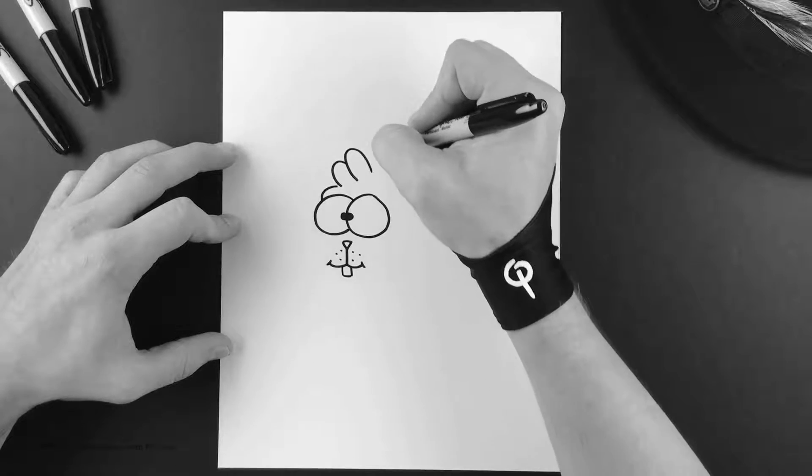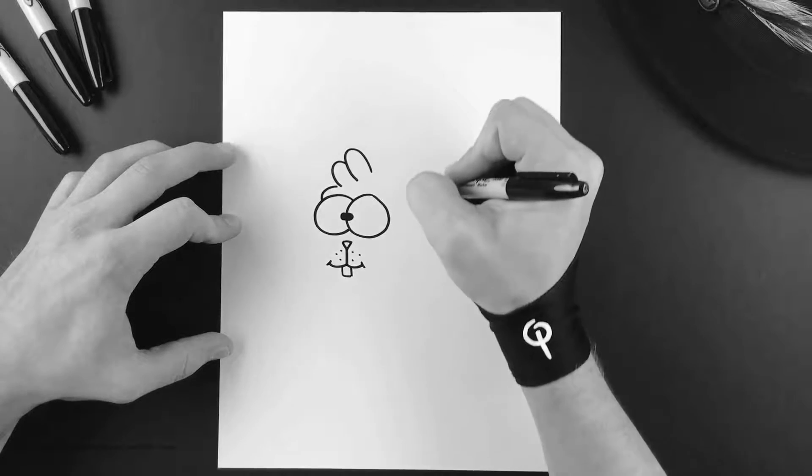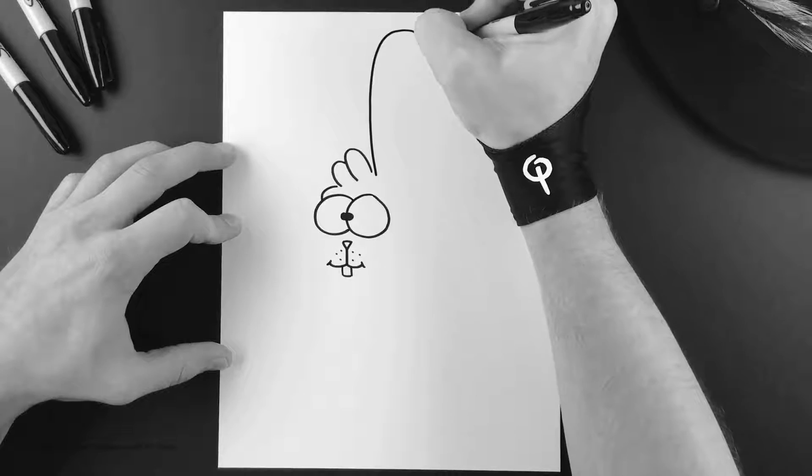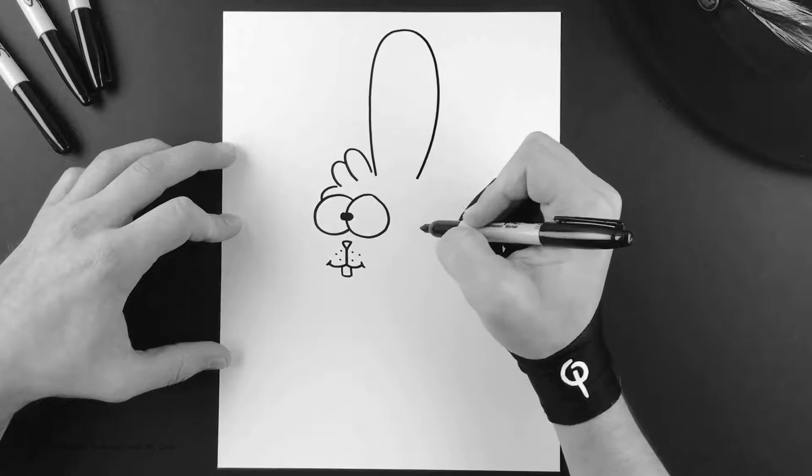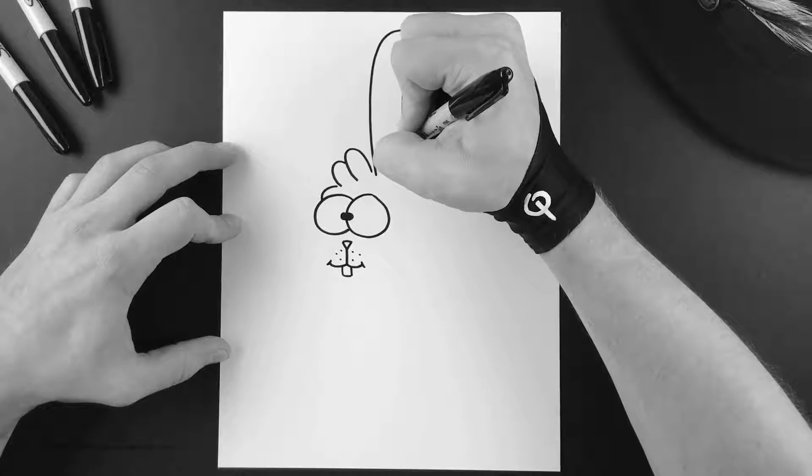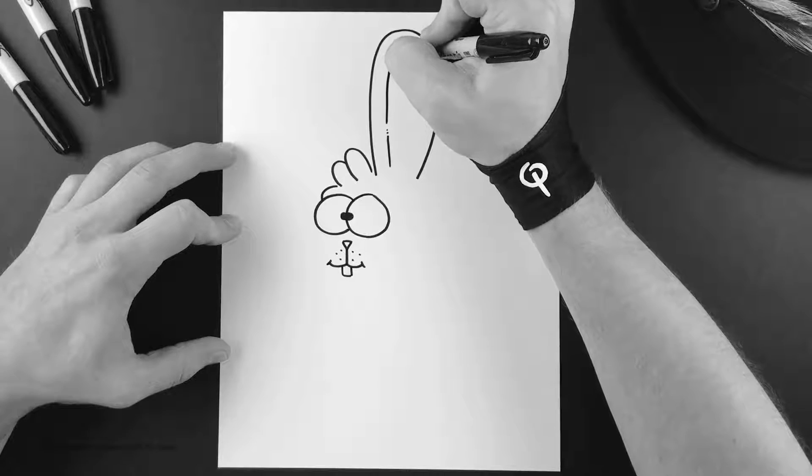Next we're gonna do one big ear. We're gonna start here and go all the way like this. So do his first ear just like that, and then of course we're gonna want to go in and add the inside of his ear.